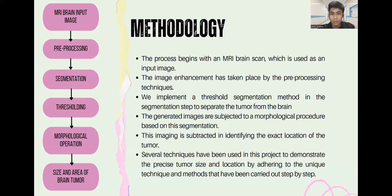The process begins with an MRI brain scan used as an input image. Image enhancement takes place during pre-processing, where we implement a thresholding segmentation method to separate the tumor from the brain. The generated image is then subjected to a morphological procedure based on this segmentation. This image is used for identifying the exact location of the tumor. Several techniques have been used to demonstrate the precise tumor size and location, carried out step by step.